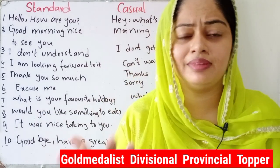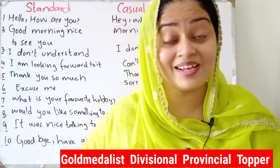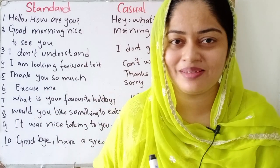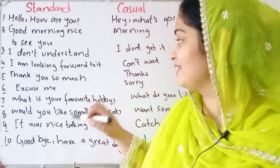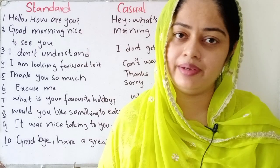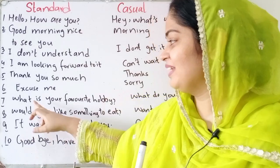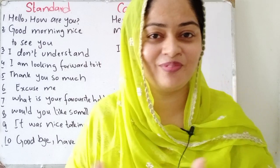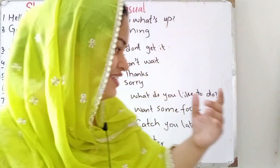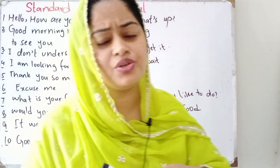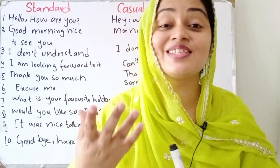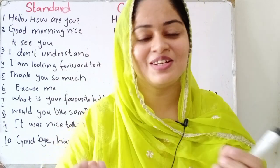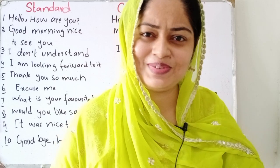Fifth: 'Thank you so much' is standard, and casual is simply 'Thanks.' Sixth: 'Excuse me' is standard, and casual is 'Sorry.' Seventh: 'What is your favorite hobby?' is standard, and 'What do you like to do?' is much more likely to be used in casual conversation.